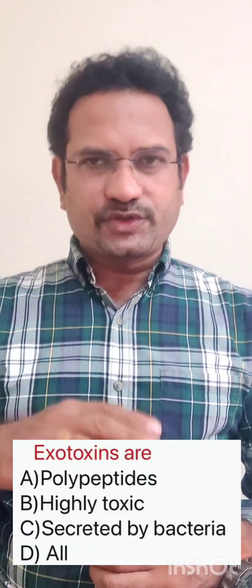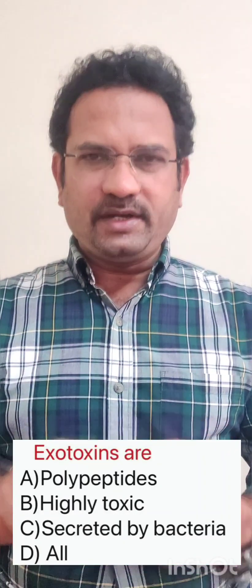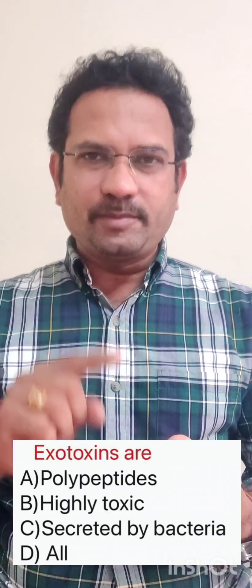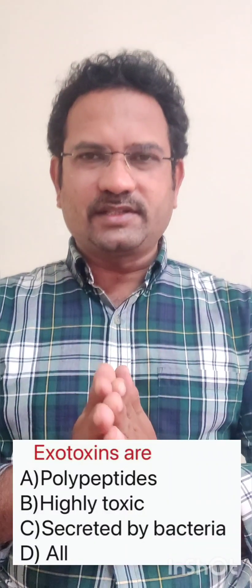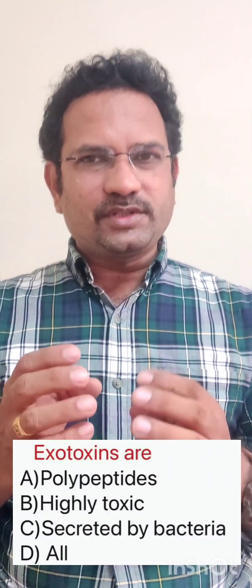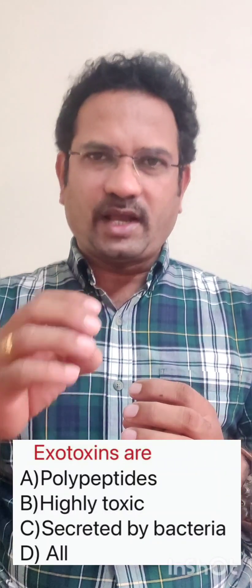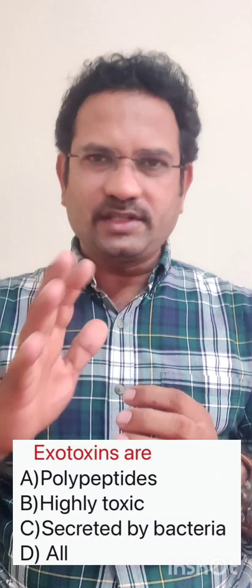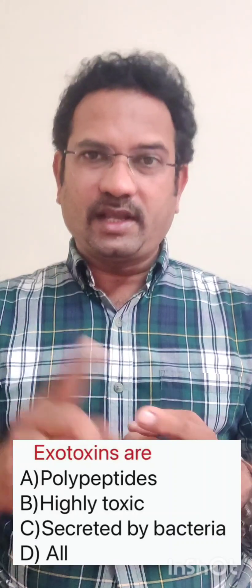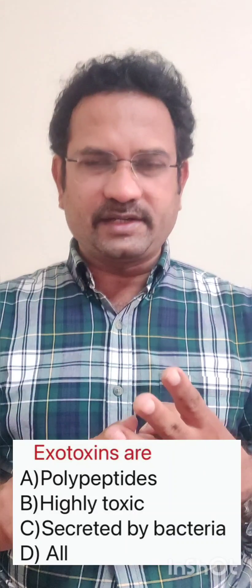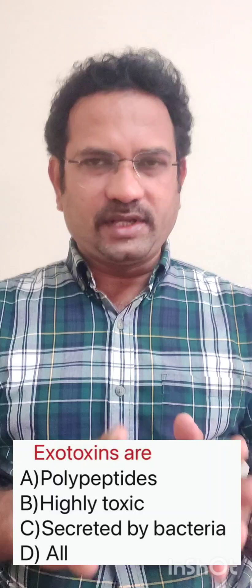The first question is: Exotoxin is — options are polypeptide, highly toxic, secreted by bacteria, all of the above. Exotoxins are chemicals which are secreted by bacteria and they cause high fever and certain symptoms. Chemically they are polypeptides and they are highly toxic, they are secreted by bacteria. So all of the above is the answer, option D.